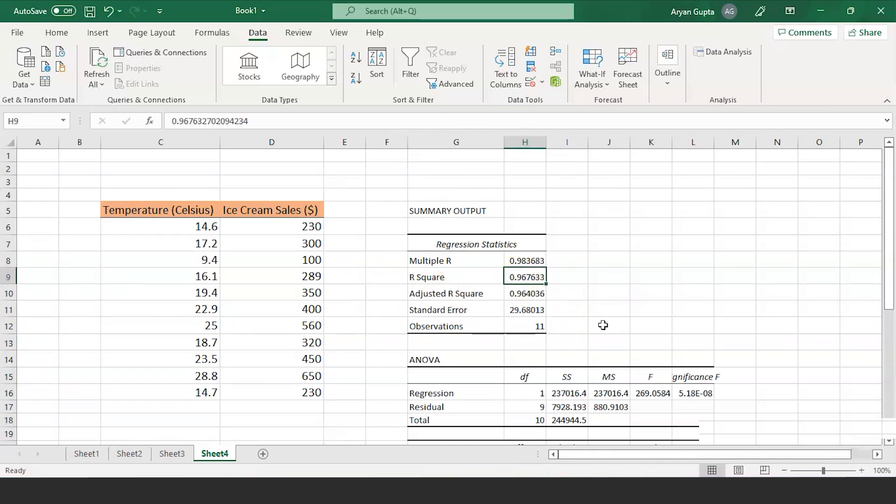We got the R-squared value to be 0.9676, which is very good. This shows that 96% of the variation in ice cream sales is explained by the temperature of the day. Closer to one, the better the regression line fits the data.